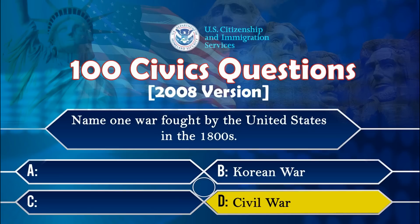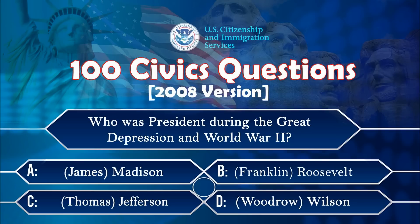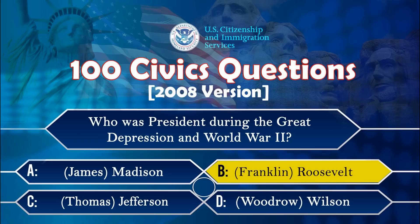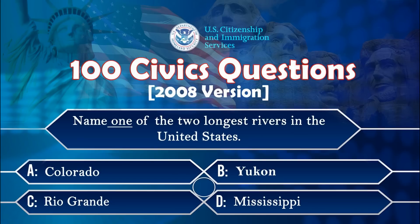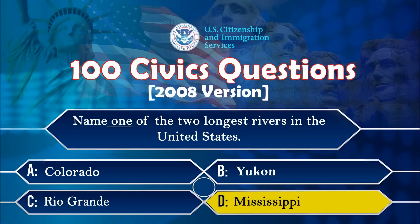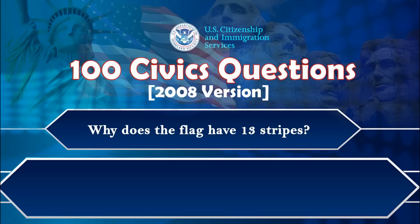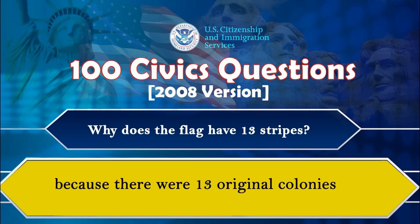Who was president during the Great Depression and World War II? Franklin Roosevelt. Name one of the two longest rivers in the United States. Mississippi. Why does the flag have 13 stripes? Because there were 13 original colonies.